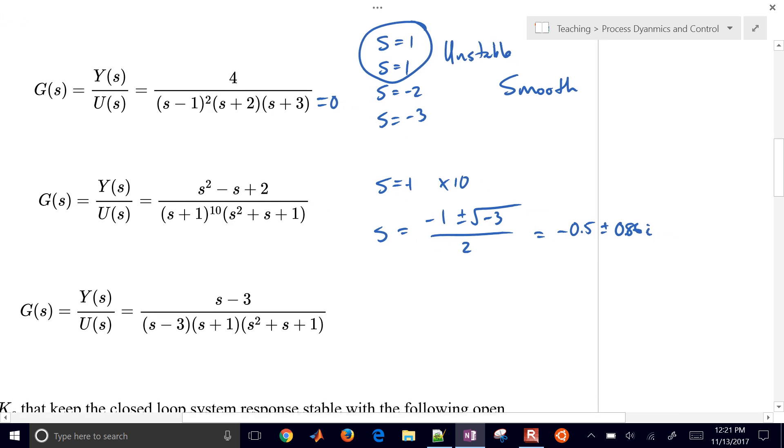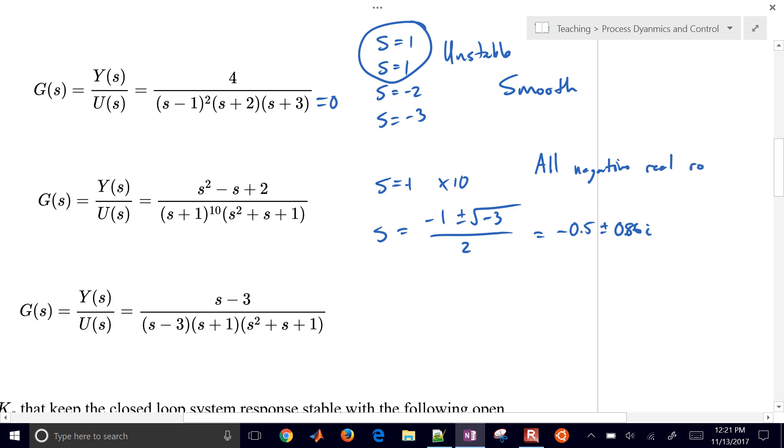So in this case, we have all negative real roots, real roots of our denominator, the poles, and so therefore it's going to be stable. And then the other thing we want to look at is imaginary parts. We do have some imaginary roots, so it's going to oscillate. So it's going to oscillate but be stable.